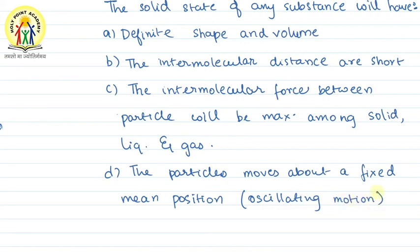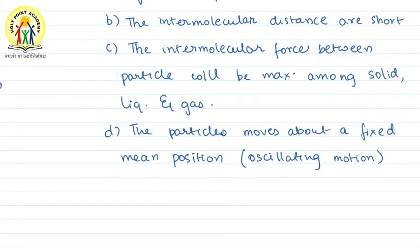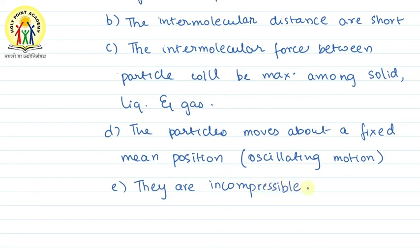If you observe under a microscope, the particles stay at their fixed positions and move about them in an oscillating manner. The last characteristic of solids is that they are incompressible — you cannot compress a solid substance. Liquids can be compressed slightly, gases can be compressed a lot, but solids are completely incompressible. I hope you have understood this sub-topic — thank you.